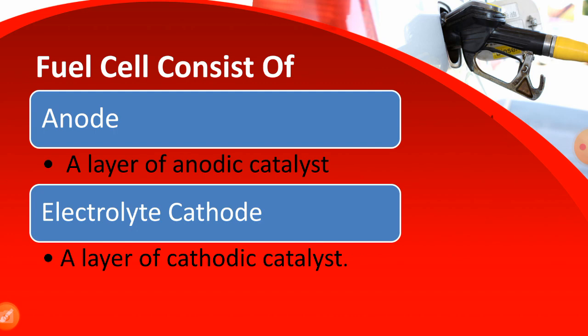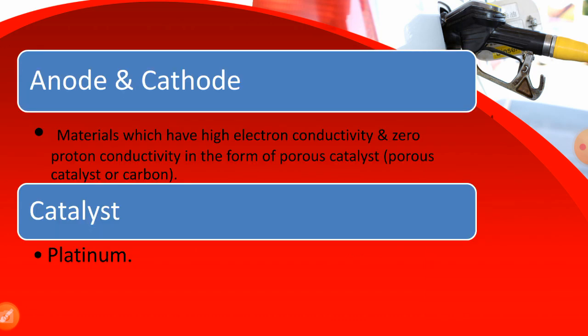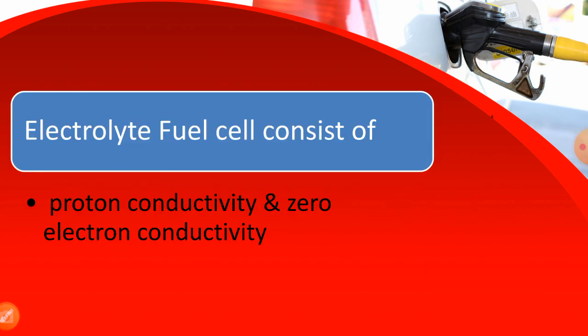A fuel cell consists of an anode, a layer of catalyst, electrolyte, and a cathode. The anode and cathode are materials which have high electron conductivity and zero proton conductivity, in the form of a porous catalyst. Platinum is used as the catalyst here. The electrolyte in the fuel cell has proton conductivity and zero electron conductivity.